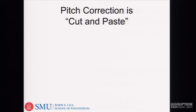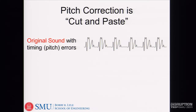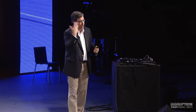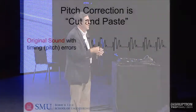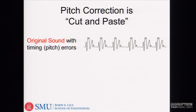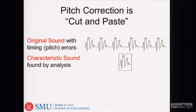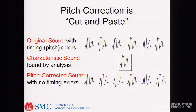Pitch correction is cut and paste. We have the original sound, which has timing and pitch errors. If you analyze the sound going into a microphone, it has a structure that repeats over and over again. The characteristic wiggle that you see is what you produce in a very short timeframe from your vocal production system, and the repetition interval corresponds to the pitch. Because these devices work so quickly, it's straightforward to analyze that sound, find its characteristic signal, cut and paste, and put them back together with appropriate intervals so that you have the right pitch — done so fast you can't tell it's happening.